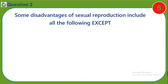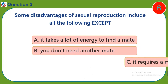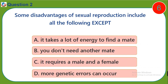Question two: Some disadvantages of sexual reproduction include all the following except — a) it takes a lot of energy to find a mate, b) you don't need another mate, c) it requires a male and a female, d) more genetic errors can occur.